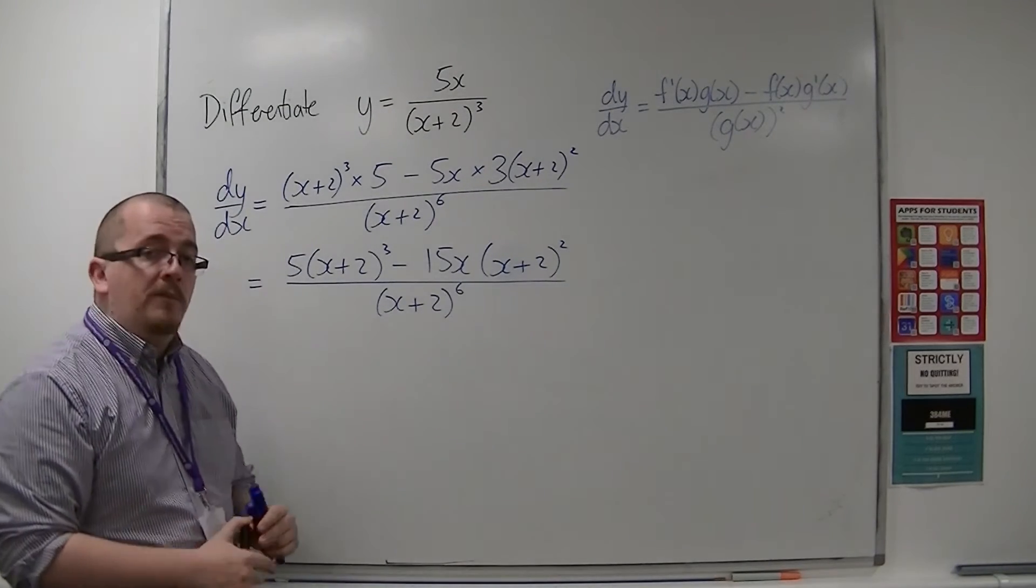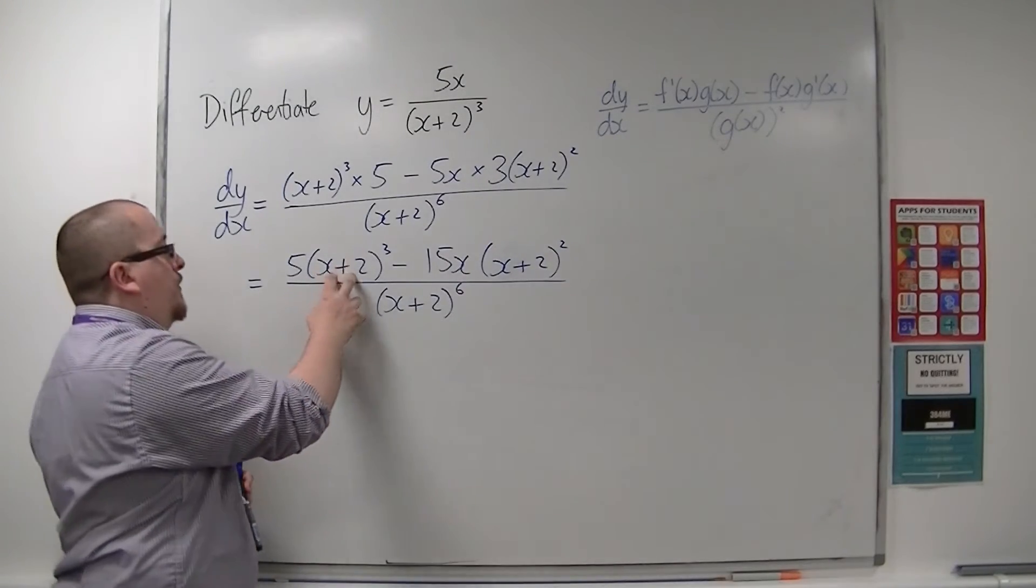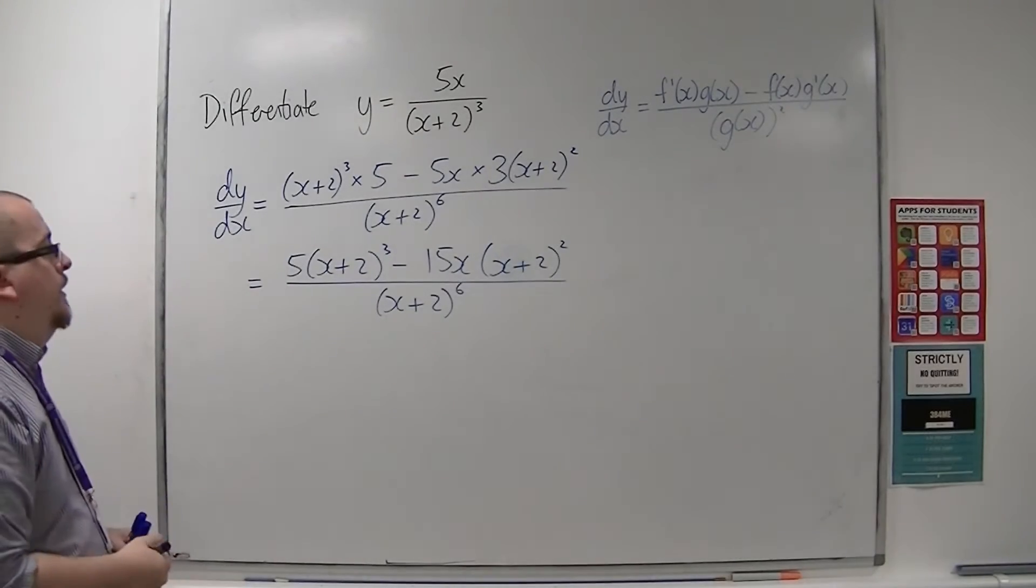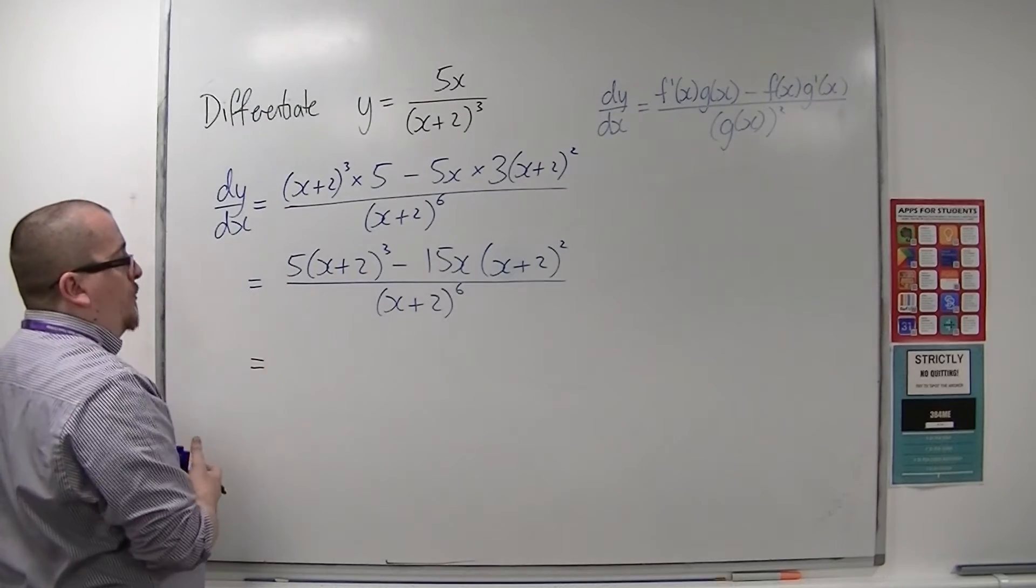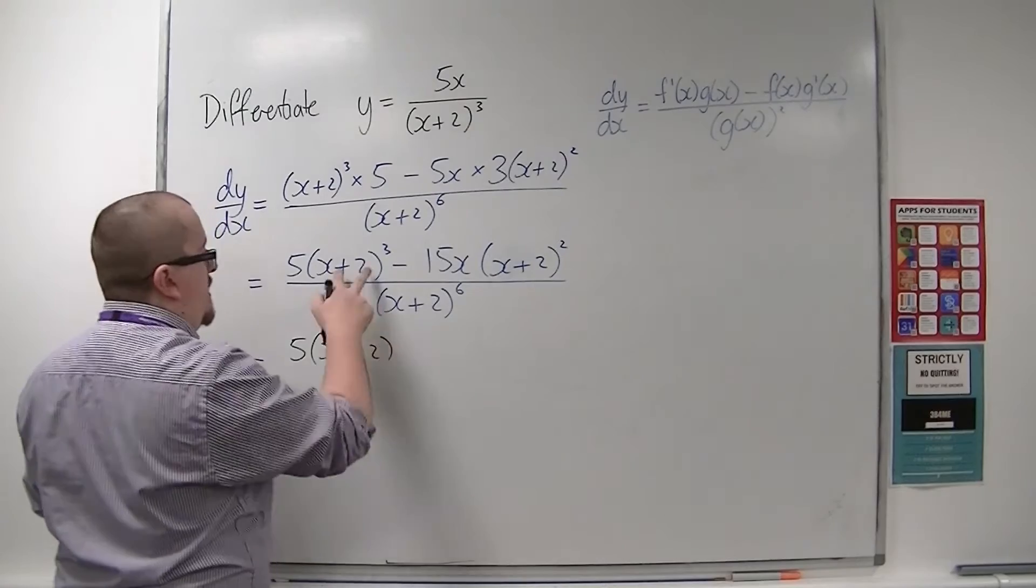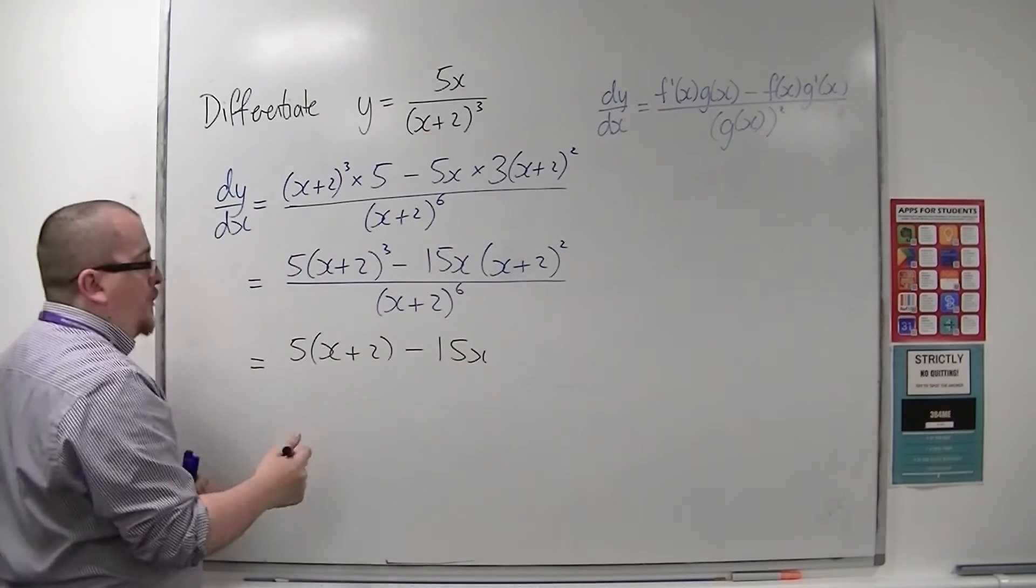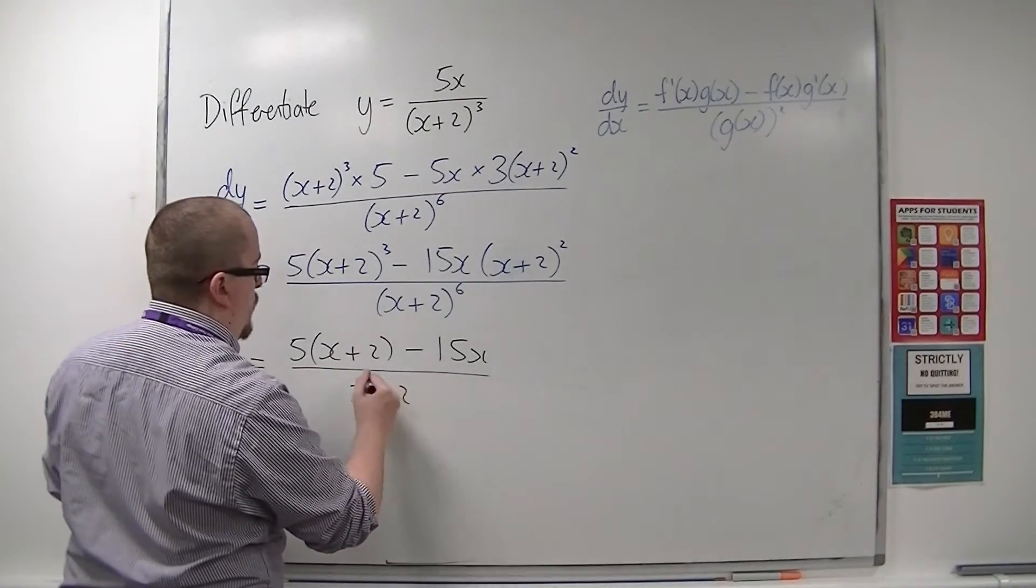So what I'm going to do is divide everything by (x+2)² because the three terms have that as a common factor. If I cancel this down, dividing everything by (x+2)², I'm left with 5(x+2), take away 15x, divided by (x+2)⁴.